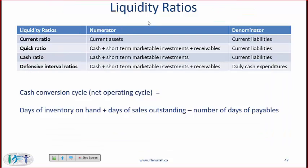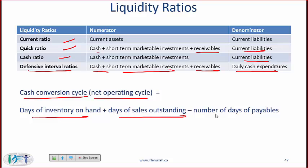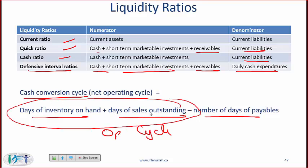Liquidity ratios: the current ratio is current assets over current liabilities. The quick ratio is cash plus short-term marketable securities plus receivables over current liabilities. The cash ratio is cash plus short-term marketable investments divided by current liabilities. The defensive interval ratio uses cash plus short-term marketable investments plus receivables divided by daily cash expenditures. The cash conversion cycle (net operating cycle) is days of inventory on hand plus days of sales outstanding minus number of days of payables. The operating cycle is days of inventory on hand plus days of sales outstanding.